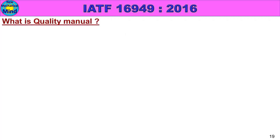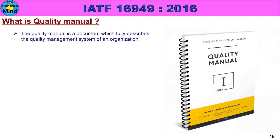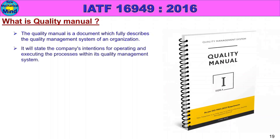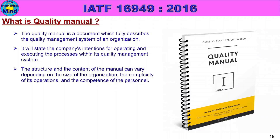What is a quality manual? The quality manual is a document which fully describes the quality management system of an organization. It will state the company's intentions for operating and executing the quality management system. The structure and content of the manual can vary depending on the size of the organization, the complexity of its operations, and the competence of the personnel.